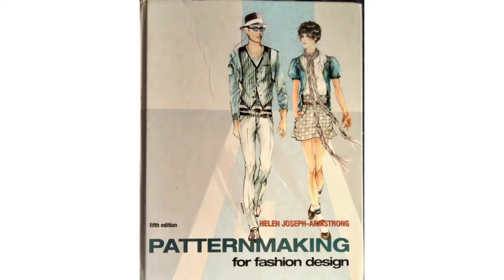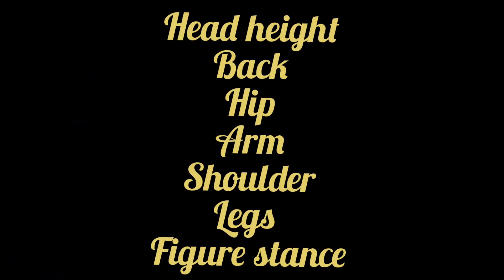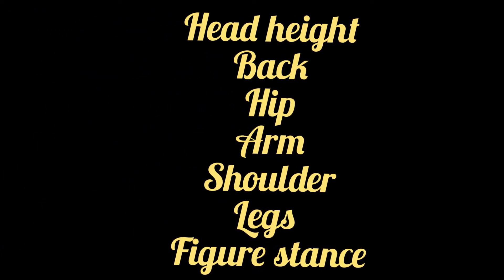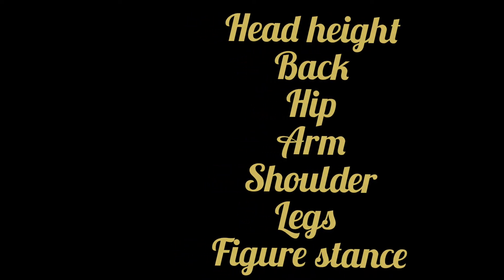In her book Pattern Making for Fashion Design, Helen Joseph Armstrong illustrated different figure variations such as head height, back, hip, arm, shoulder, legs, figure stance, and their relationship with one another. Let's take a closer look at some of these figure variations.